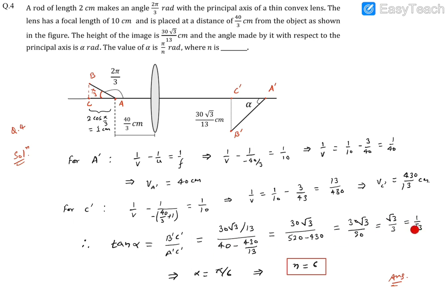So tan α = 1/√3, which means α must be π/6. If it is π/6, then n must be 6.